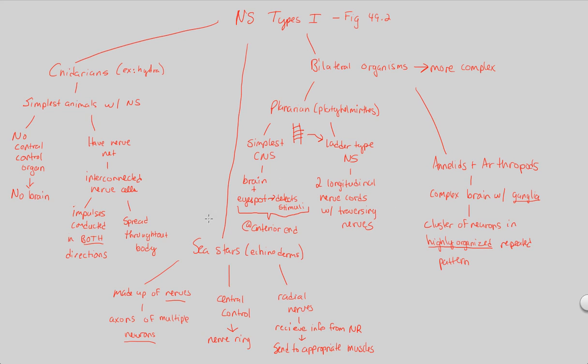That covers our first look at the different types of nervous systems. Notice how we're getting more and more complex. Take a look at this figure to see a visual representation of the different nervous systems covered so far.